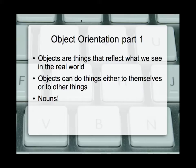For example, buttons. We've seen buttons in the real world — we have buttons all over the place. A button has properties and it has methods. Properties are things that describe that button, and the methods are the things that that button can do. Some objects interact with other objects and can do things to other things as well.